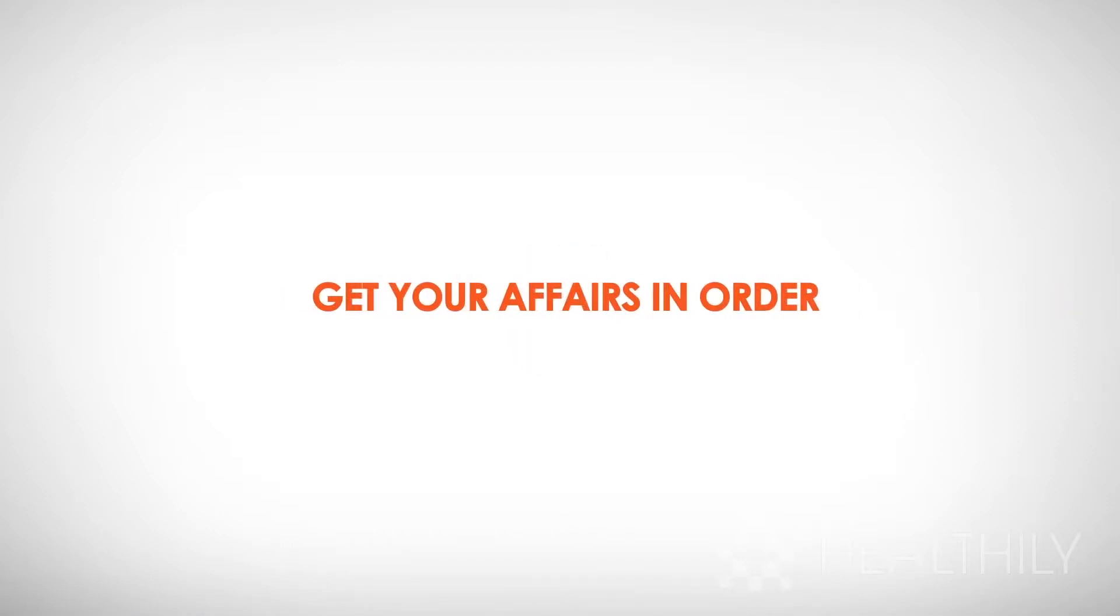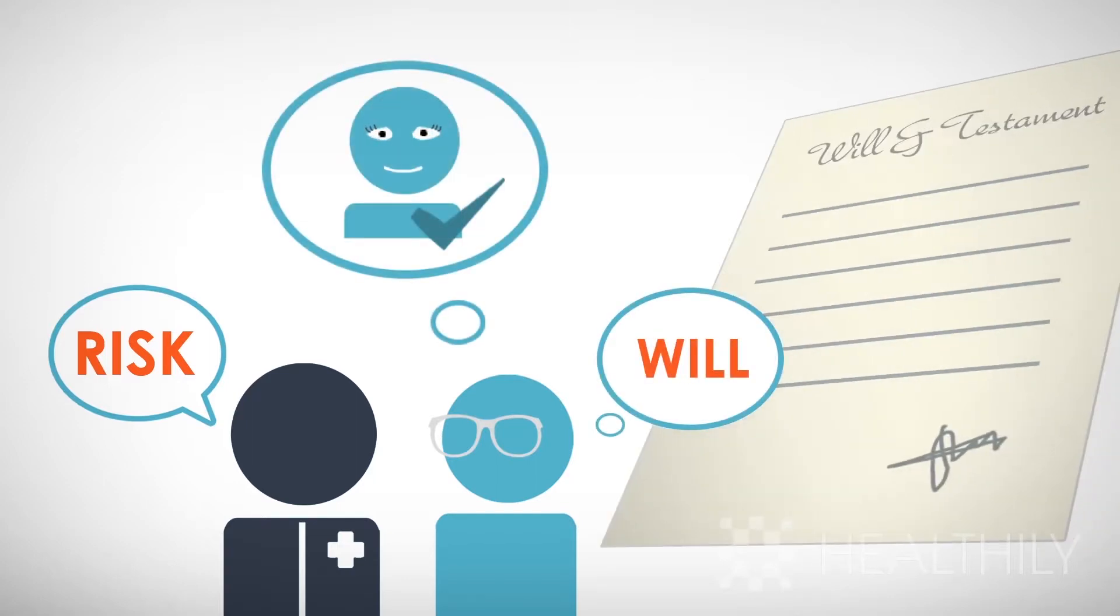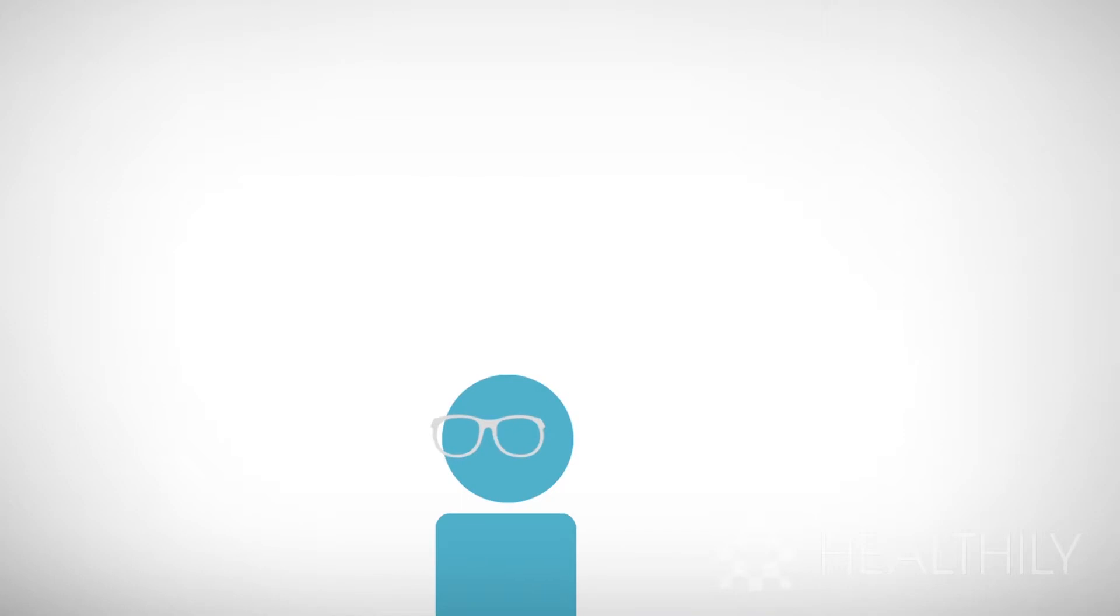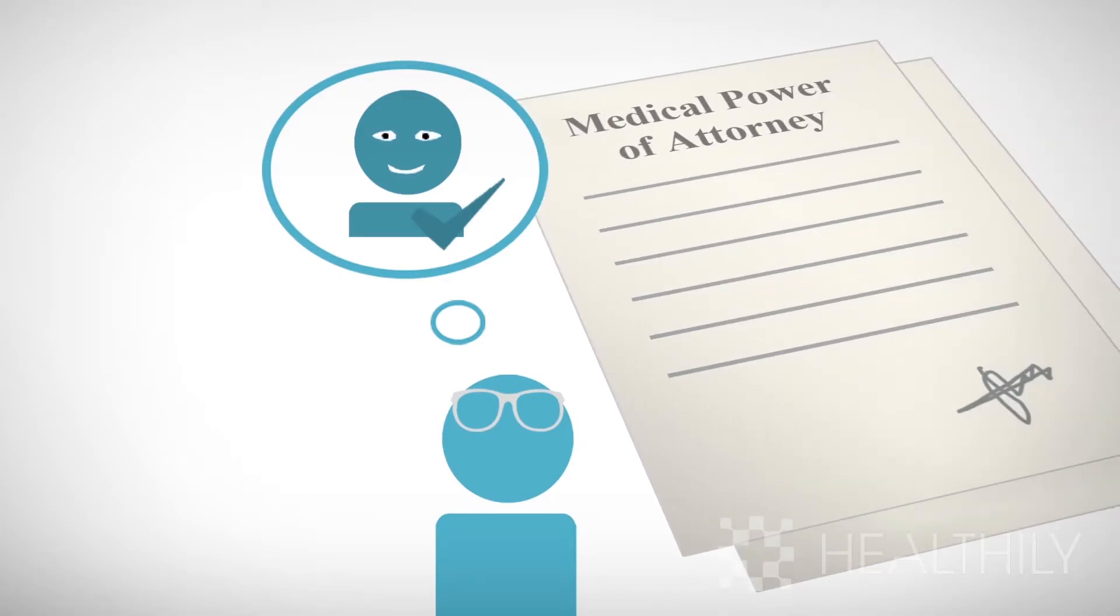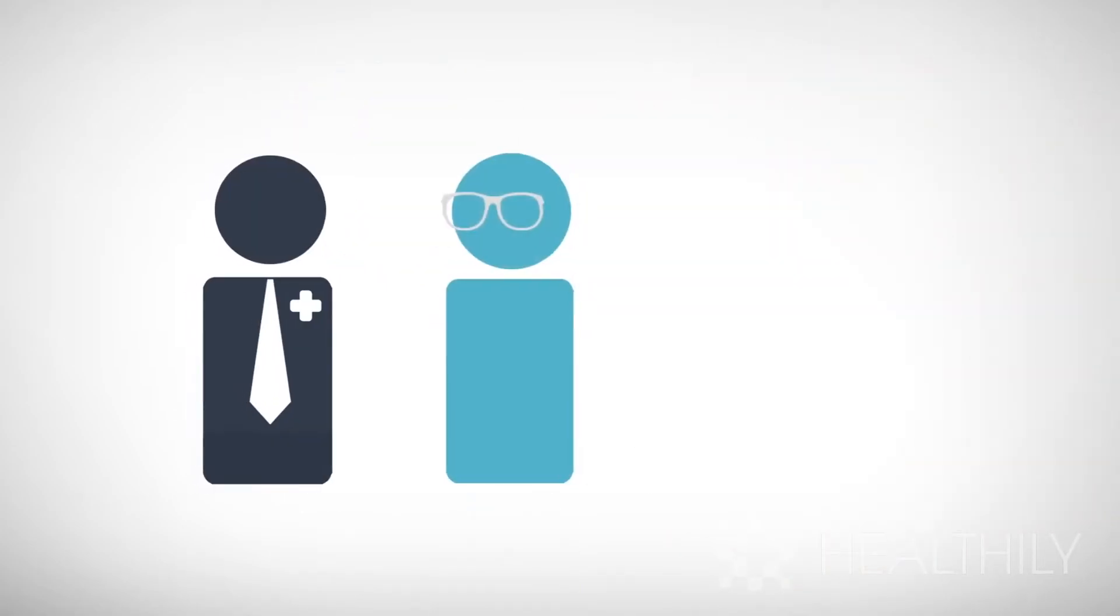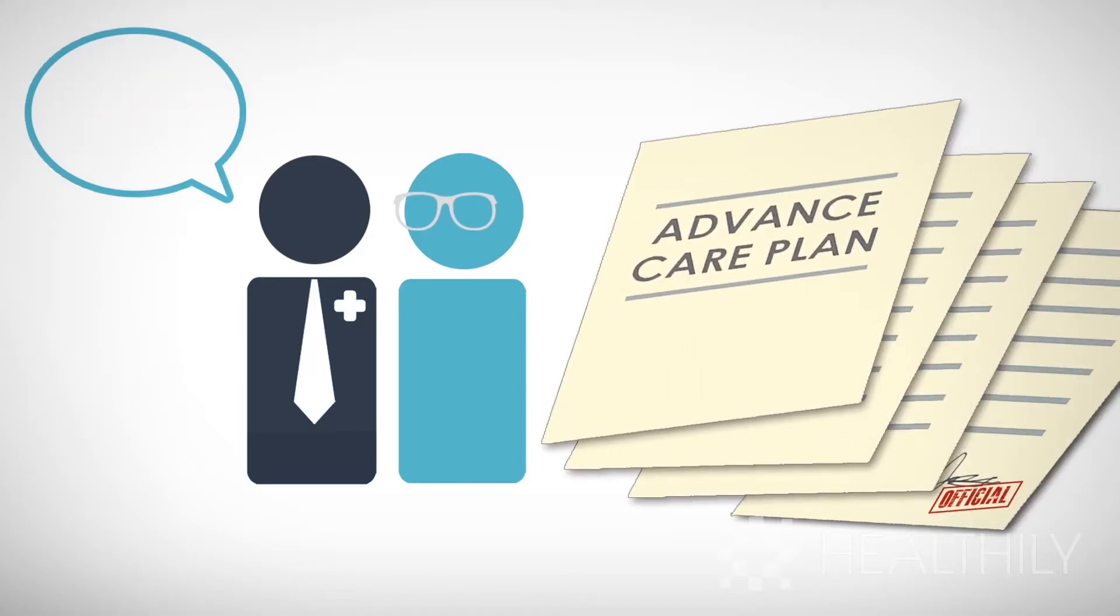3. Get your affairs in order. Any hospital stay can involve risk, which your doctor or specialist will have explained to you. So make sure your will is up to date and appoint someone you trust as medical power of attorney to make important medical decisions on your behalf if you are unable to. An advanced care plan is another good idea which lays out instructions in advance on how you want to be treated in various circumstances if you are unable to make decisions for yourself about your treatment.